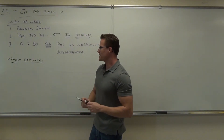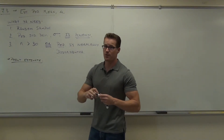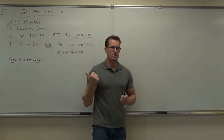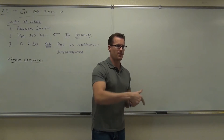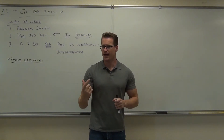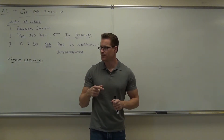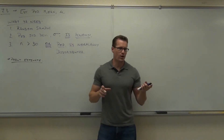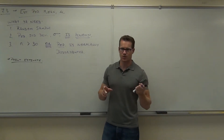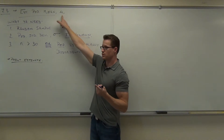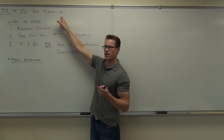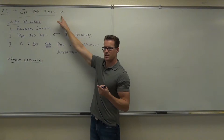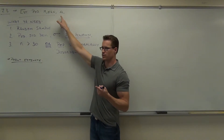A point estimate is a single value from a sample that is used to represent the population. P-hat was the point estimate for P. Can you think outside the box here — what's the point estimate going to be for mu? Mu is the population mean. So what's the point estimate going to be for mu?